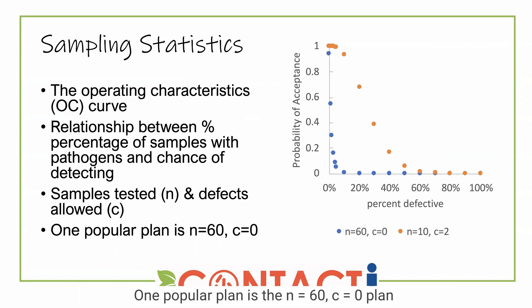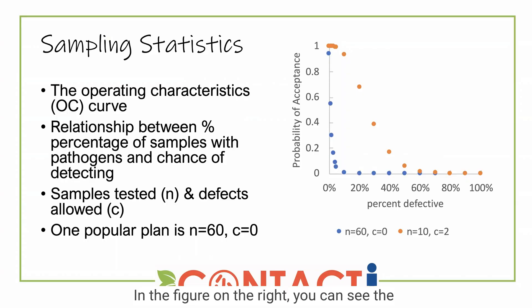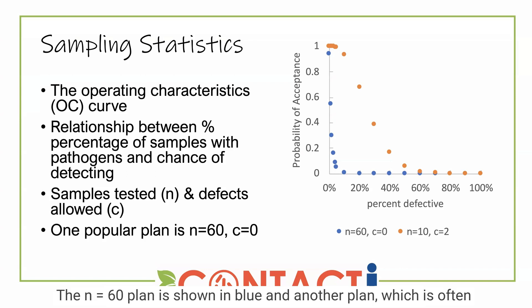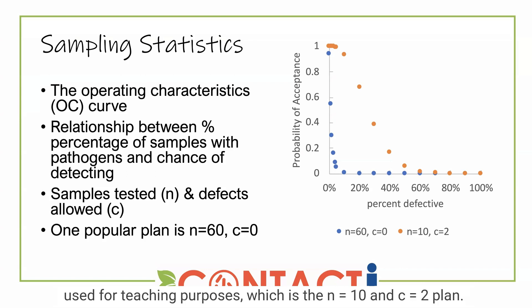One popular plan is the N equals 60, C equals zero plan, often just referred to as an N60 plan. In the figure on the right, you can see the relationship between the probability of acceptance and the percent defective for two different plans. The N equals 60 plan is shown in blue, and another plan, often used for teaching purposes, is the N equals 10 and C equals two plan.